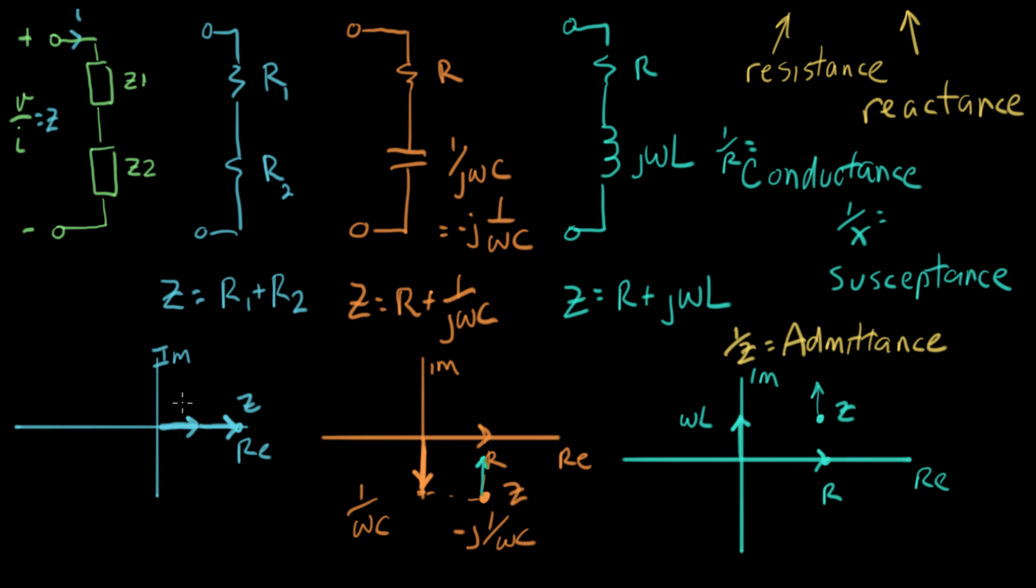And on the resistor side, if omega changes, well, there's no omega term here. So nothing changes when omega changes in this resistor picture. So this shows us what happens in a graphical way when we change the frequency of a complex impedance.